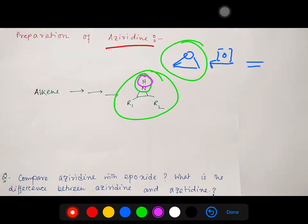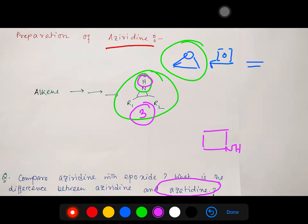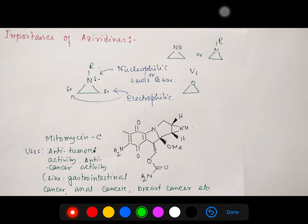Another important structure to know is azetidine — a four-membered ring analog, whereas aziridine is a three-membered ring. Today we will mainly discuss the preparation of aziridines. Let's start with understanding the importance of the aziridine moiety.